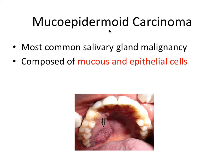First we have mucoepidermoid carcinoma. This is the most common salivary gland malignancy, and probably the most important thing you need to remember about this one. It's composed of mucus and epithelial cells, which is pretty apparent since the name refers to mucoepidermoid. And here it is on the palate.